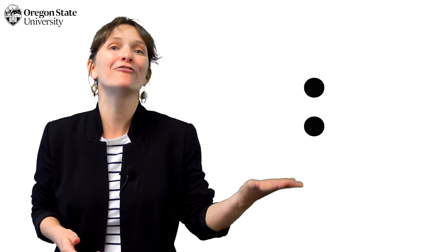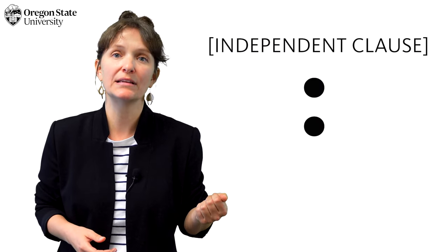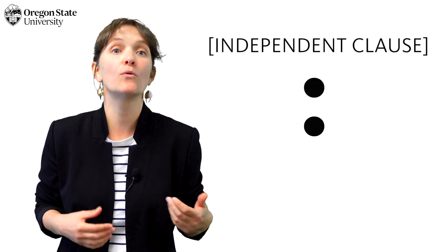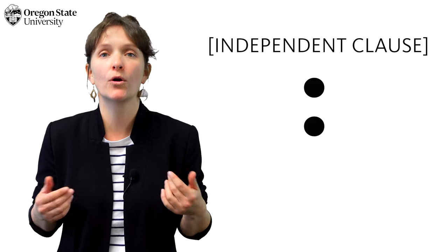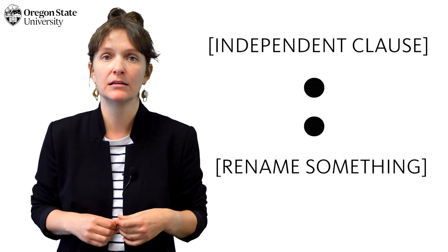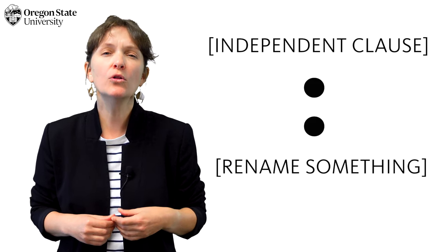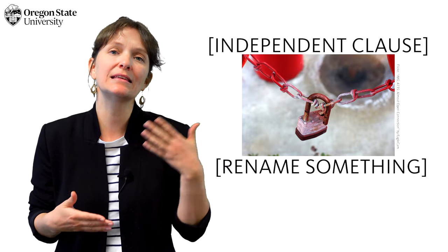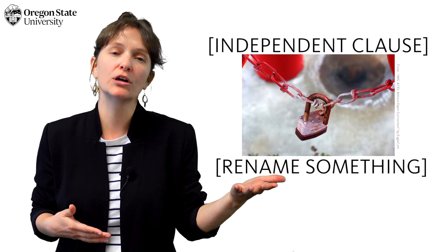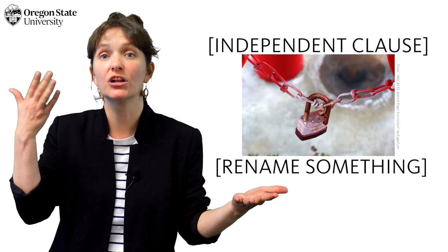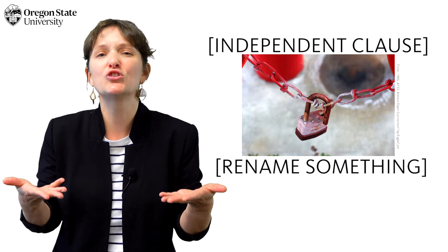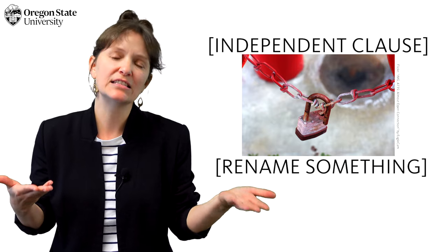At this point, you may have noticed the pattern. The colon always comes after an independent clause, or complete sentence, and it always comes before we rename some aspect of that clause. The colon serves to connect them, showing that the second part works as an explanation of the first part — in the first two examples, a list or a quote. And that's true in usage number three as well.